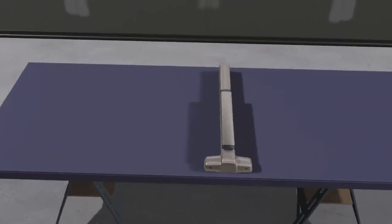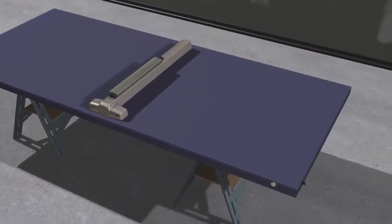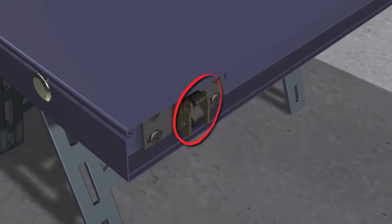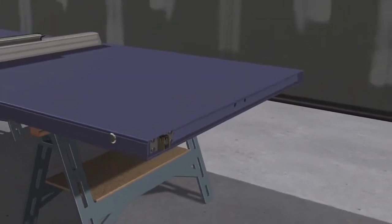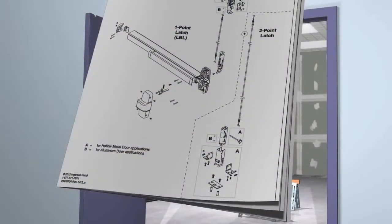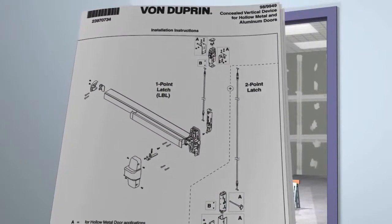Once the cable system and exit device are installed, it's time to hang the door. It's important to note that when hanging the door, the latches must be in the retracted position. This ensures the bottom latch will not be exposed and damaged during installation. Refer to the instructions to prep and install the surface mounted top strike.